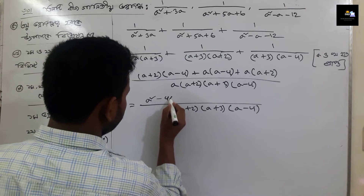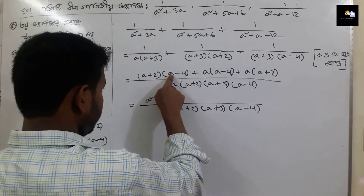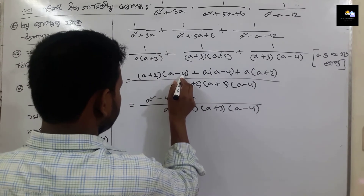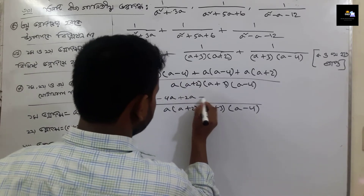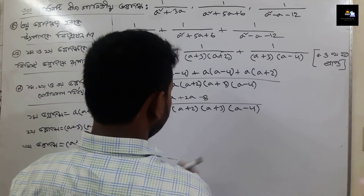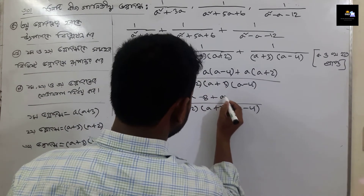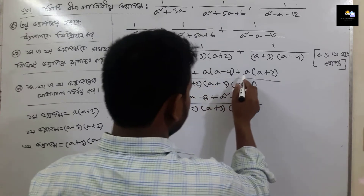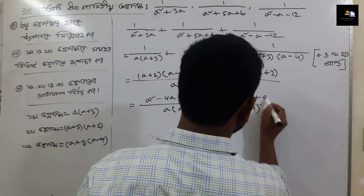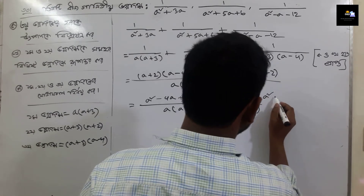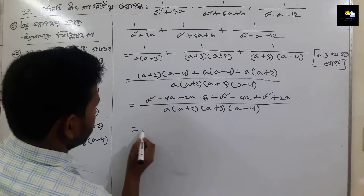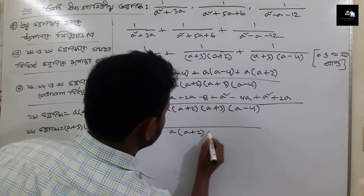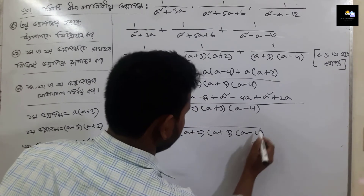The next step is a equals to a minus 4. We have 2, we have 4, 6. So we have a square, a square, a square, and a square minus 4. Now a square is plus a square and a square is plus 2a. So: a plus 2, a plus 3, a minus 4.